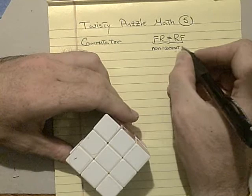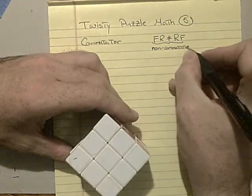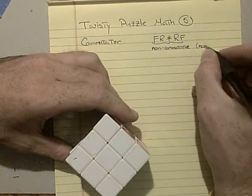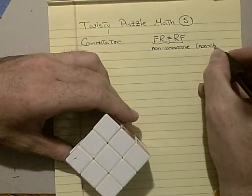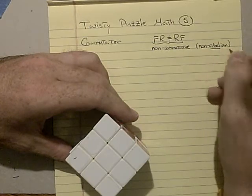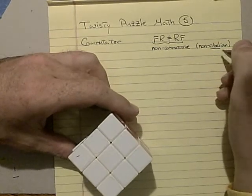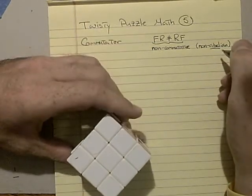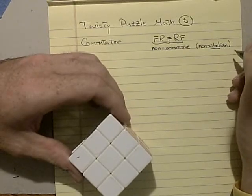If you like fancy words, the math word is non-abelian, named after Abel, who was a mathematician involved with the early development of algebra.